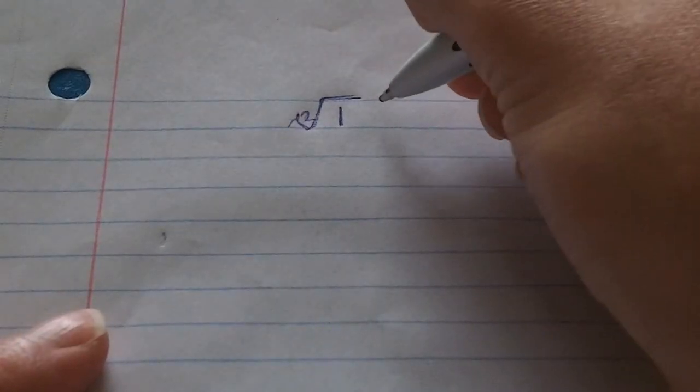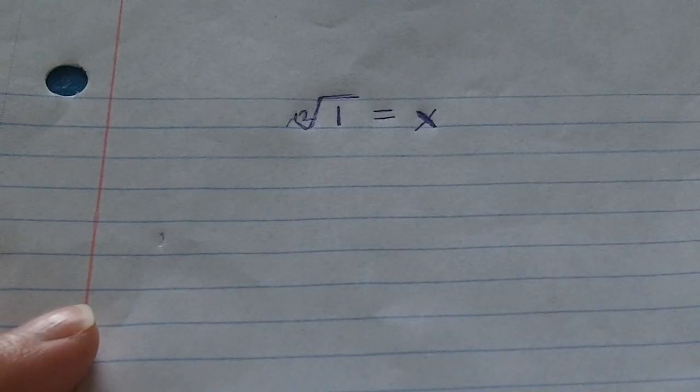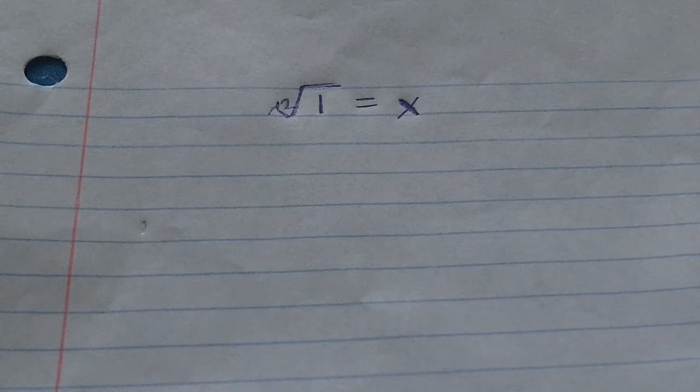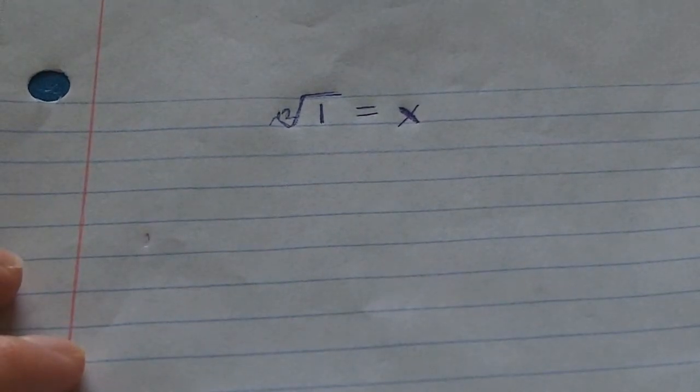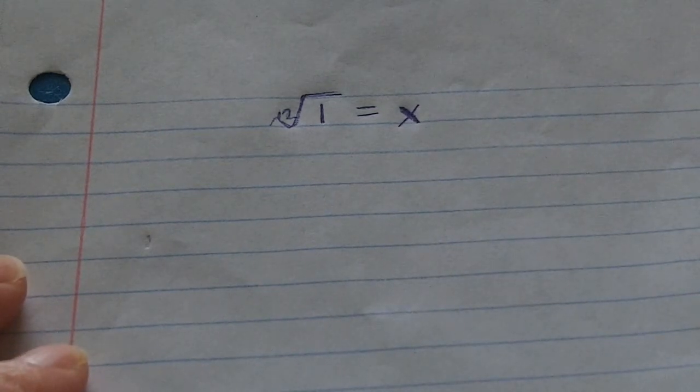In this case we can simply say that the twelfth root of one is equal to x. Let us suppose that it is the first solution to this polynomial which we're forming. And in order to form it, it's actually quite simple.